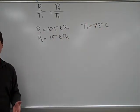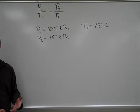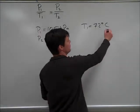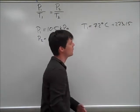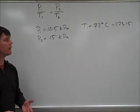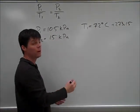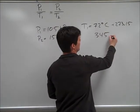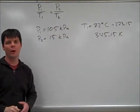To do that temperature conversion, we're always going to add 273.15. So, this allows us to calculate that our T1 is 345.15 Kelvin.